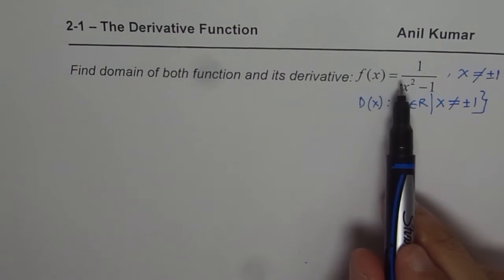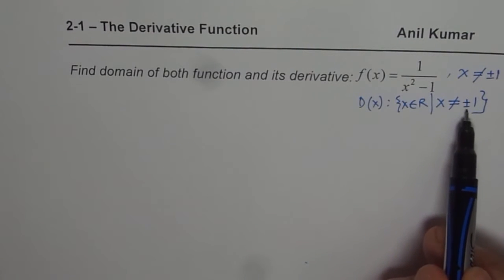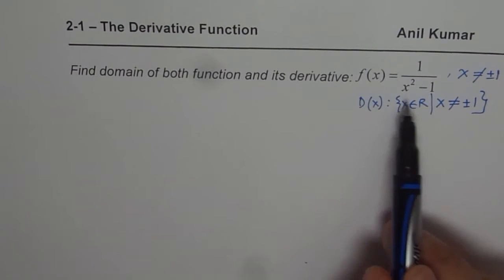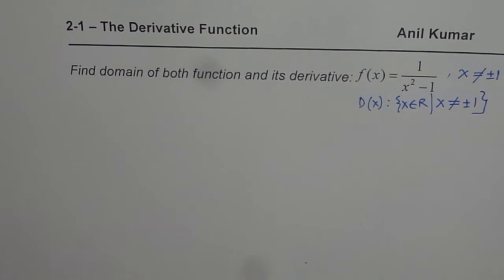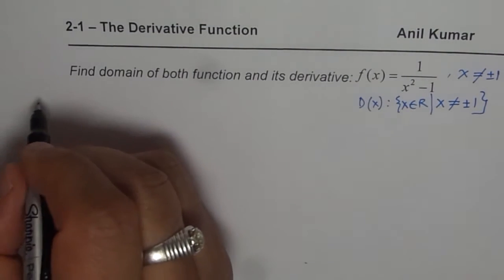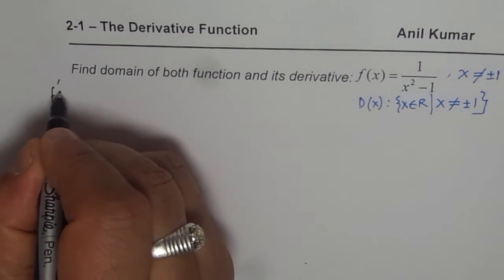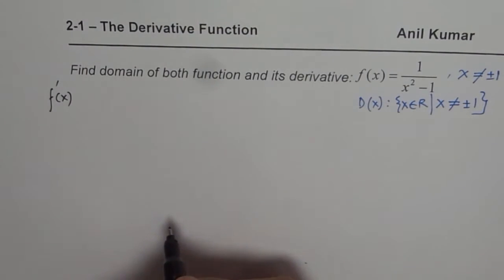As far as the derivative is concerned, since ±1 is not in the domain of the function, it cannot be in the domain of the derivative either. But sometimes it is possible to find additional points where the derivative may not exist. Let us investigate by finding the derivative using the basic definition, also called the first principle.